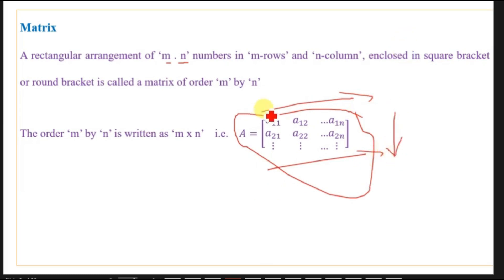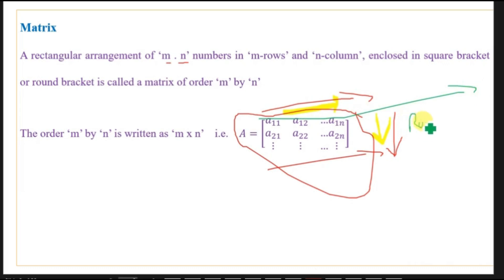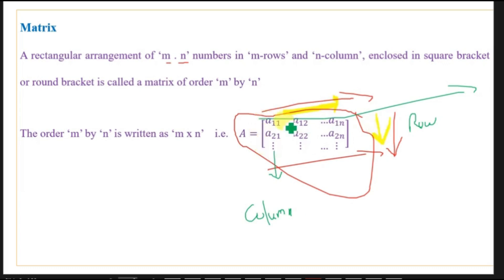These are the horizontal arrays and these are the vertical arrays. The horizontal component is known as a row, and the vertical component is known as a column. So a matrix is a system — a representation which contains all the elements arranged in rows and columns, enclosed in a square bracket or a single bracket.